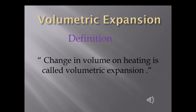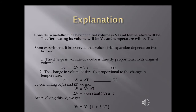Now we discuss volumetric expansion. Change in volume on heating is called volumetric expansion. Volume is the product of three lengths, so when all three dimensions increase simultaneously on heating, that is called volumetric expansion. Consider a metallic cube with initial volume V1 at temperature T1. After heating, its volume becomes V2 at temperature T2. Volumetric expansion depends on two factors.